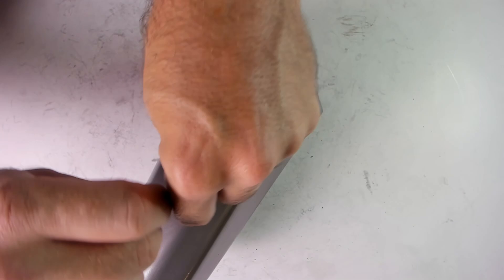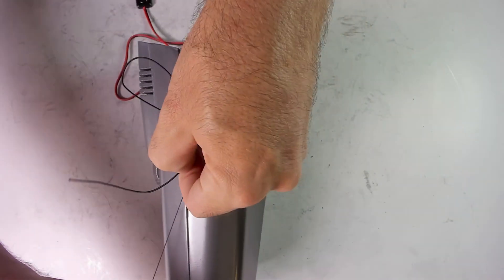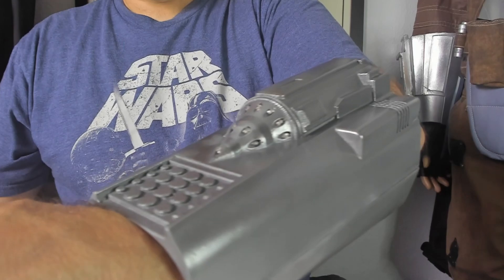And now the last step of attaching the two halves with the elastic cord. Here's the finished left gauntlet complete with LED lights.